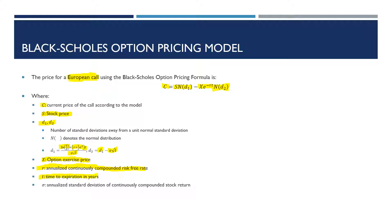T is the time to expiration in years — so for example, if the option expires in a quarter of a year, T is going to be a quarter. And sigma is the annualized standard deviation of the continuously compounded stock return. We have to be clear that this is an annualized standard deviation, rather than the standard deviation over a week or a month. So in practice, applying the option pricing model is often quite mechanical and just involves inputting figures into the formula to calculate a call option premium. After we've got this call option premium, when we get to the put-call parity theorem, we'll be able to calculate put option prices and look for arbitrage opportunities.